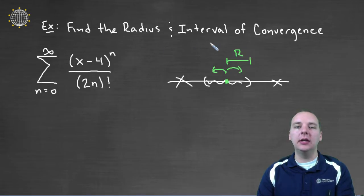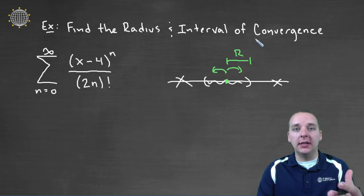And so that distance from the center out to the edge is called the radius of convergence. So these two guys are closely related, although they're a little different. The radius of convergence is a numerical value. The interval of convergence is an interval.